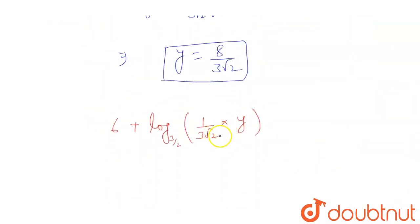Like this. Now this can be 6 plus log base 3 by 2. This can be written as 1 by 3 root 2 times y. Y is what? 8 by 3 root 2.